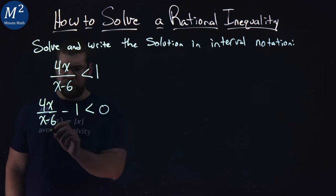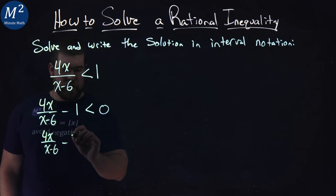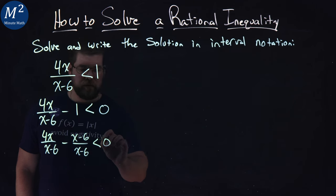x minus 6 over itself. So 4x over x minus 6 minus x minus 6 over x minus 6, and that's less than 0 still.